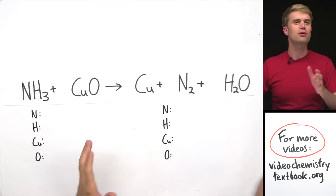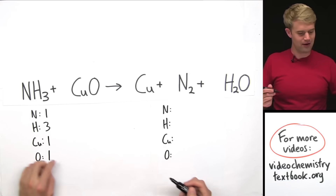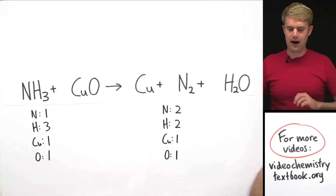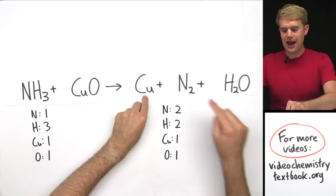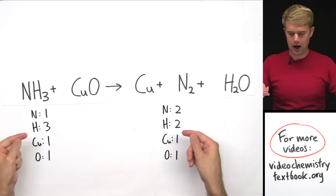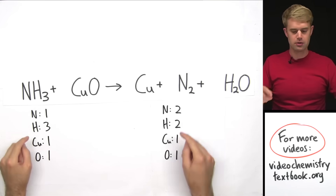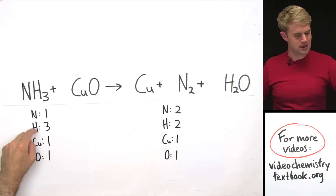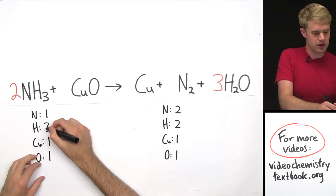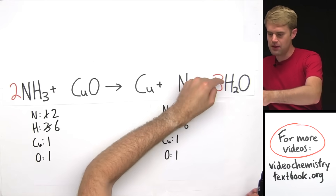These are getting more complex — it takes more steps to balance them. This one has nitrogen (one), hydrogen (three), copper Cu (one), and oxygen (one) on the left. On the right: two nitrogens, two hydrogens, one copper, and one oxygen. Copper and nitrogen are on their own so I'll leave them for last and focus on hydrogen and oxygen. The oxygens are balanced but the hydrogens are not — it's a three-to-two situation, so I do a crisscross multiplication to get six.